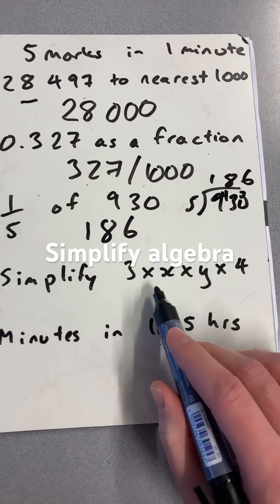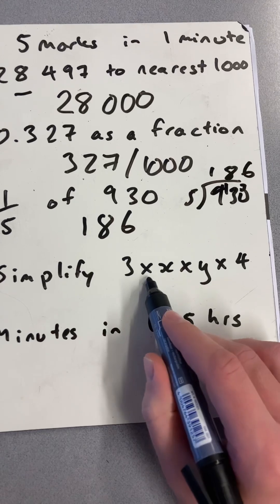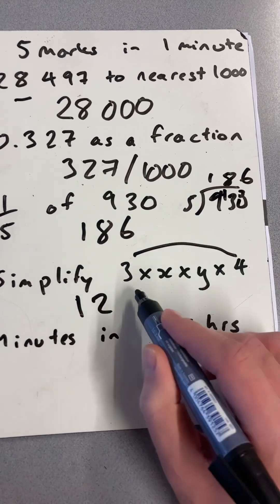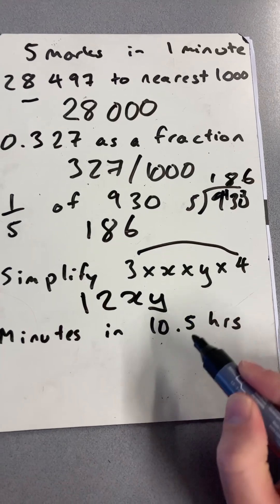Then simplifying 3 times x times y times 4. Those are the times, that's the variable. Do the numbers: 3 times 4 is 12, and x and y can't simplify any further.